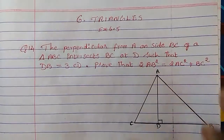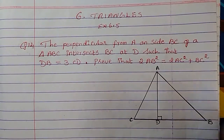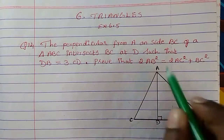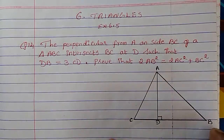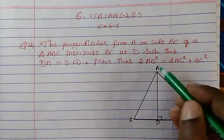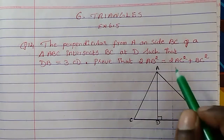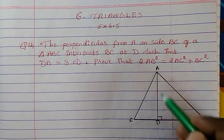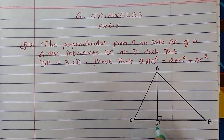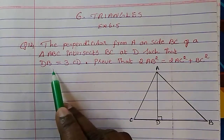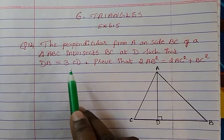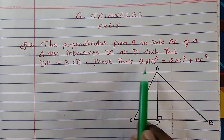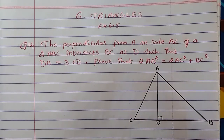The diagram is already given to us. There is a perpendicular from A on side BC, intersecting BC at D such that DB equals 3 times CD. We have to prove that 2AB² equals 2AC² plus BC².